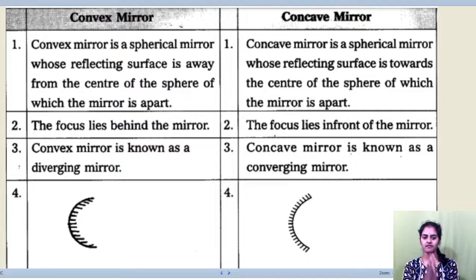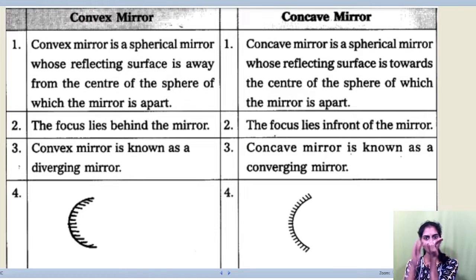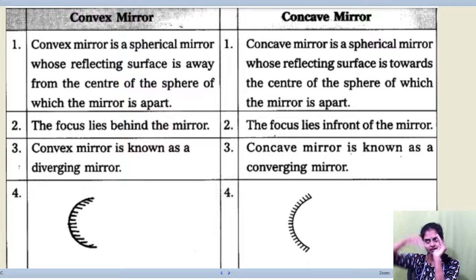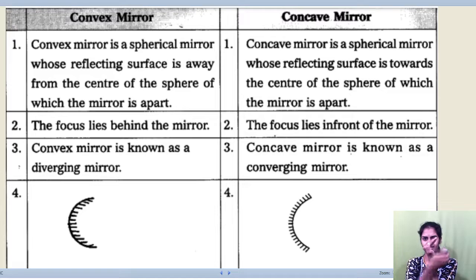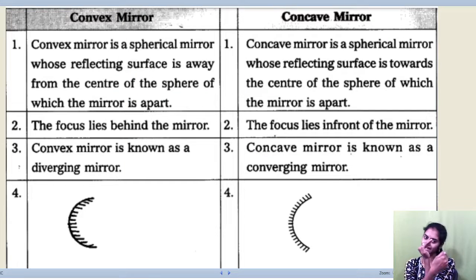A convex mirror is a spherical mirror, as you can see in point number 1 on your screen, whose reflecting surface is away from the center of the sphere of which the mirror is part. In a concave mirror, the center of the sphere is in front and the mirror is part of it — towards the center. Whereas in a convex mirror, it is away from the center.